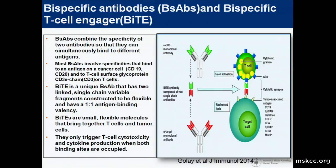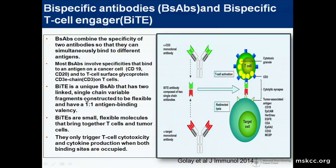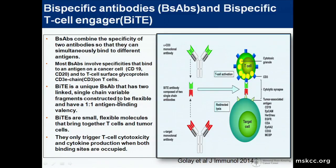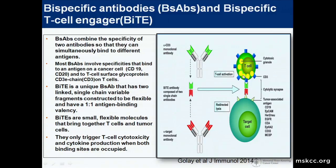A BiTE is a unique bispecific antibody — really a single-chain variable fragment construct linked together in a flexible design to give you one-to-one antigen binding and valency. These are small, flexible molecules where you take the variable regions of the two antibodies and combine them to get your bispecific.